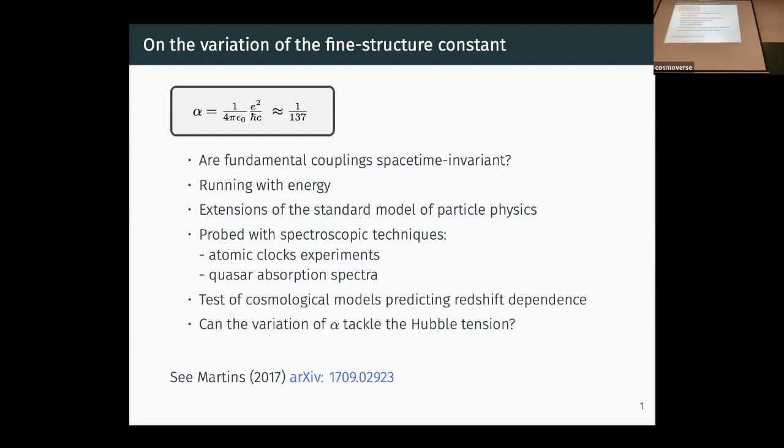The particularity of alpha is that it can be probed directly with spectroscopic techniques through atomic clock experiments on Earth and also the observation of quasar absorption spectra. Therefore, it's possible to test cosmological models that predict the redshift dependence of the variation of alpha. In the following, I will be proposing one of those models and taking the opportunity to emphasize the degeneracy that exists between H0 and the value of alpha at the time of recombination.